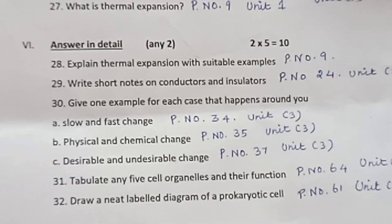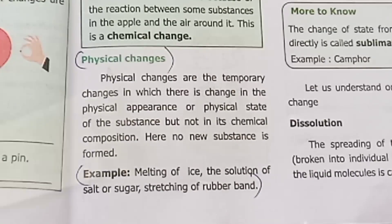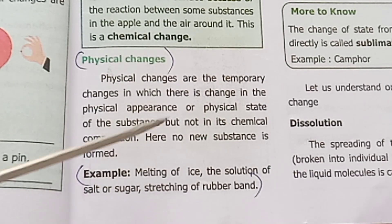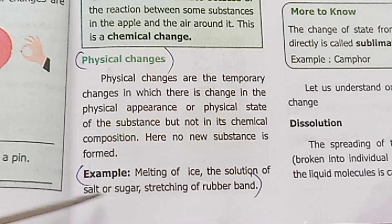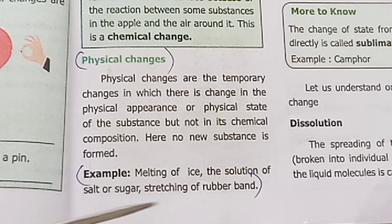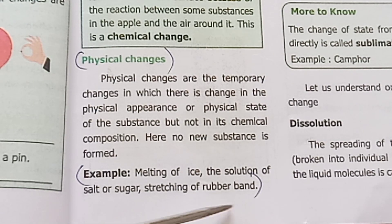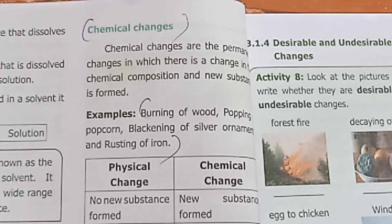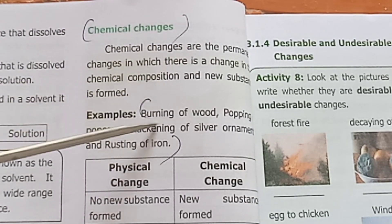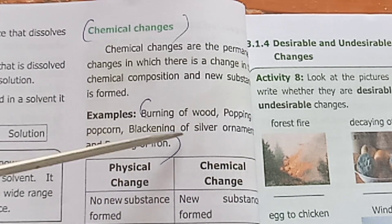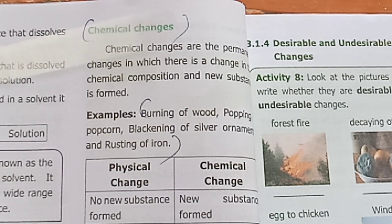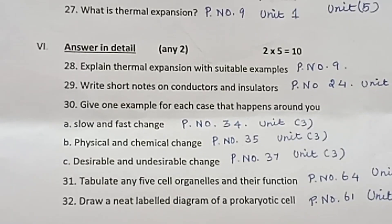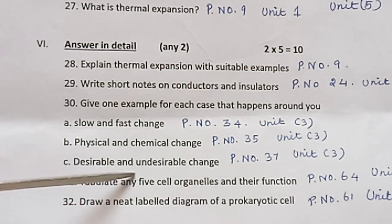Part B: Physical and chemical changes. Page number 35, Unit 3. Physical change examples: melting of ice, dissolving of salt and sugar, stretching of a rubber band. Chemical change examples: burning of food, popping of popcorn, blackening of silver ornaments, rusting of iron.